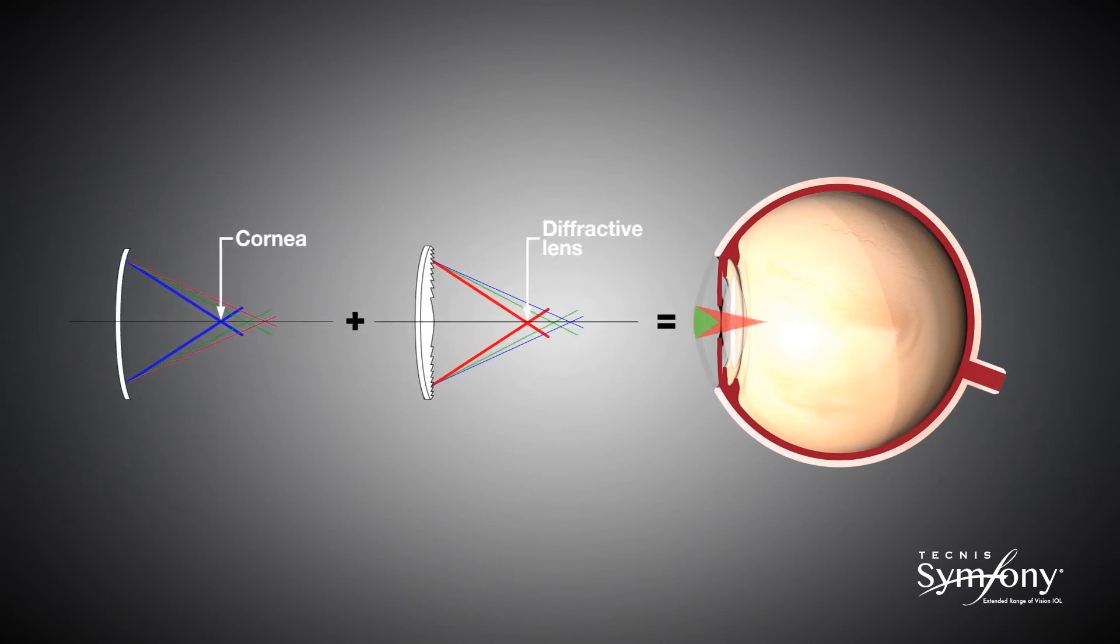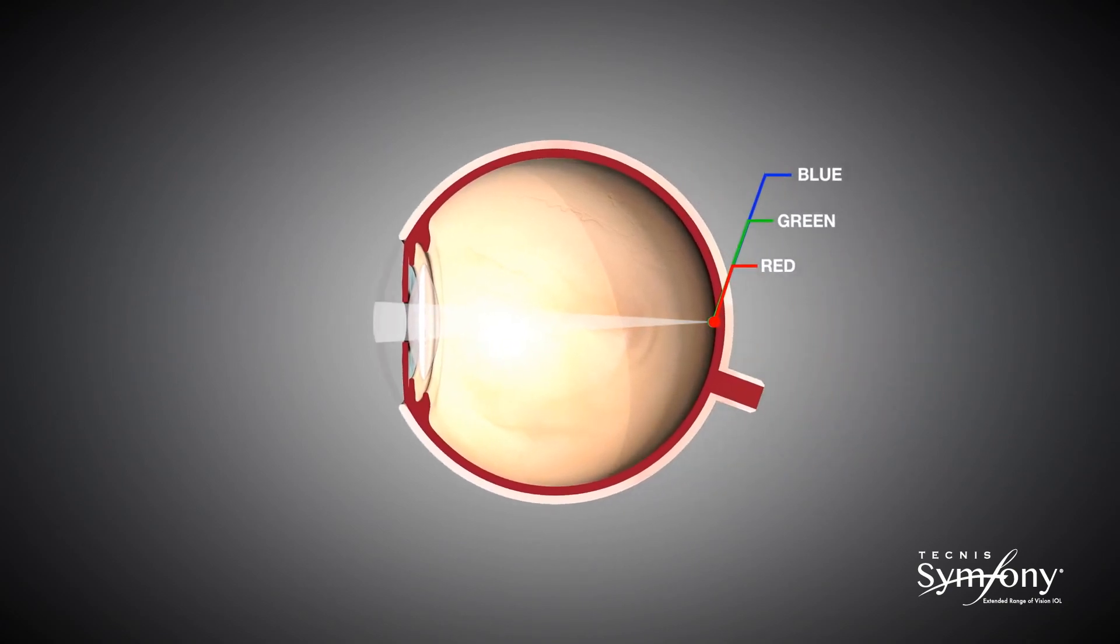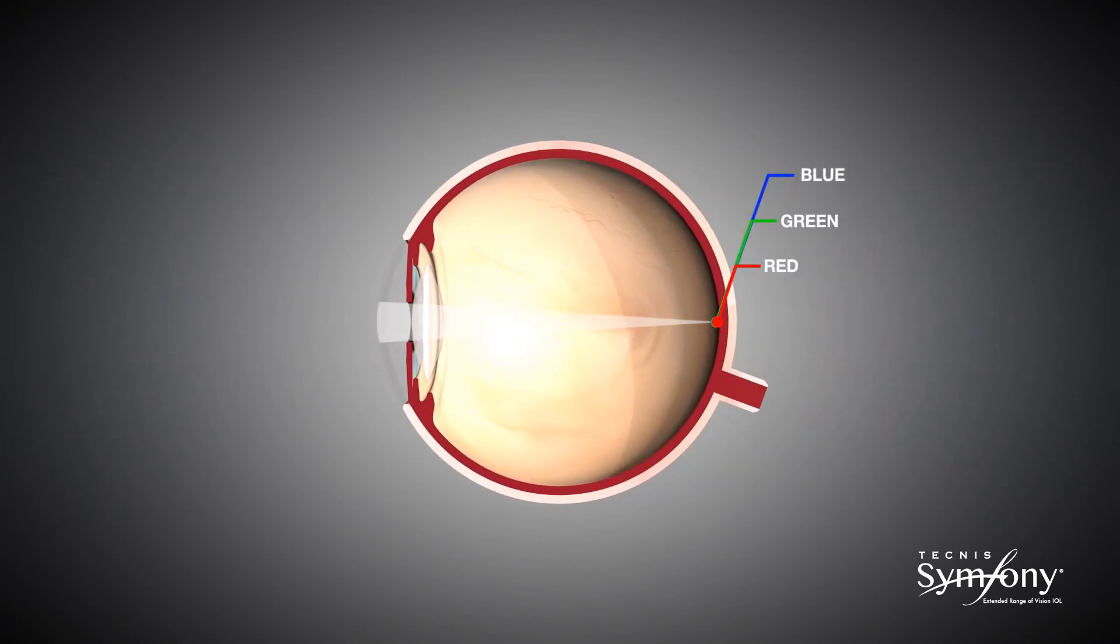Chromatic aberration can be reduced with a diffractive IOL because a diffractive lens is opposite to the cornea in that it is more powerful for red light and less powerful for blue. The effect is that the wavelengths of color meet at the same focal point, so the blur and aberrations are reduced.